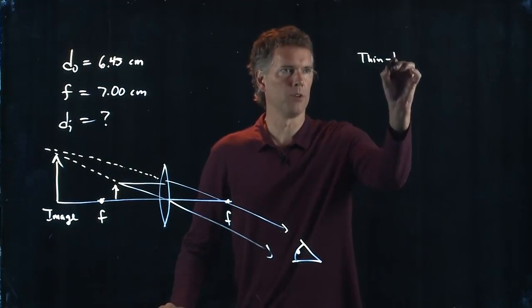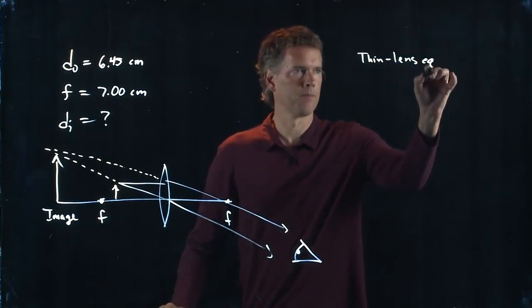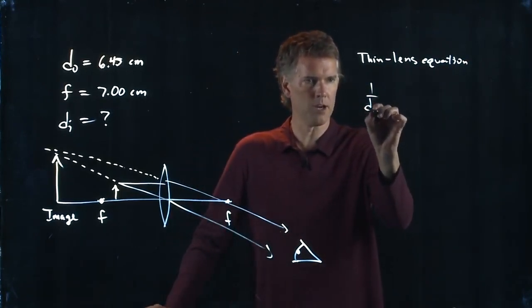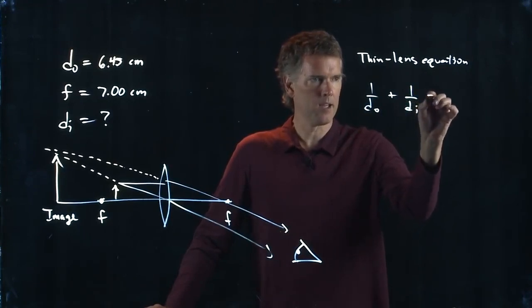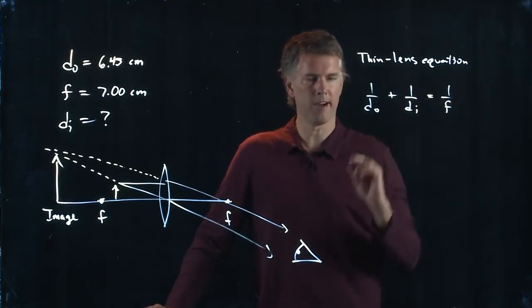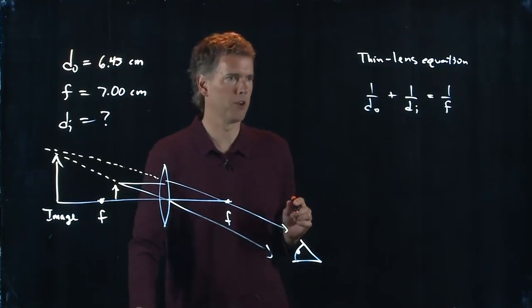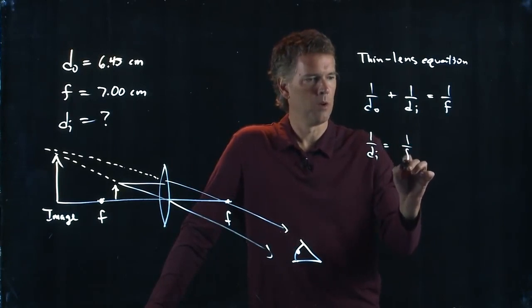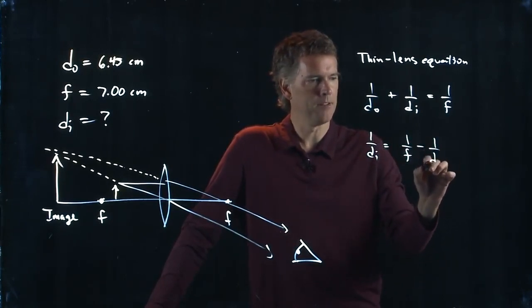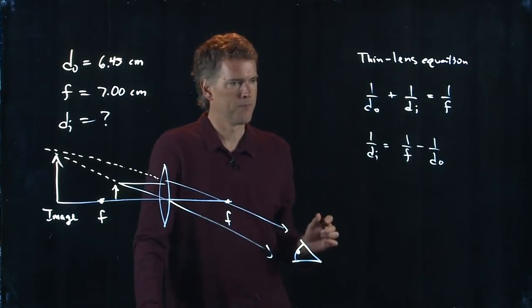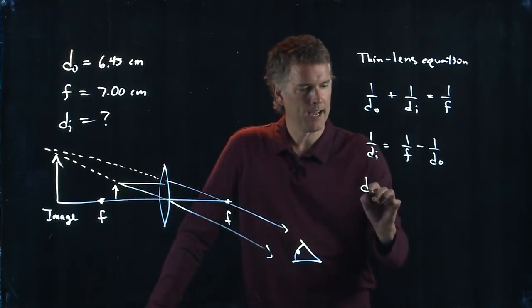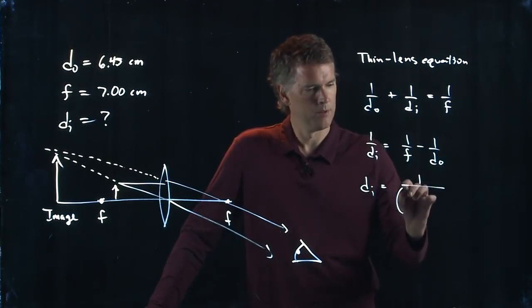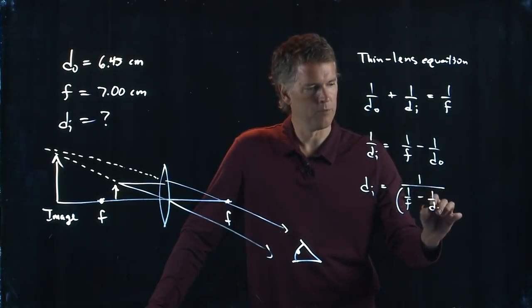So if we go to the thin lens equation, we have the following: 1 over DO plus 1 over DI equals 1 over F. And we're looking for DI. So we can solve this for DI. We get 1 over DI equals 1 over F minus 1 over DO. And so we get DI is equal to 1 over, open parenthesis, 1 over F minus 1 over DO.